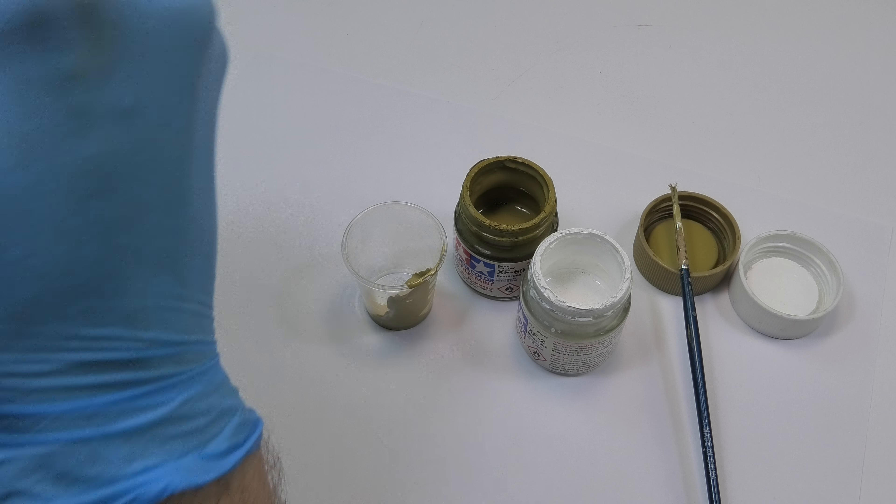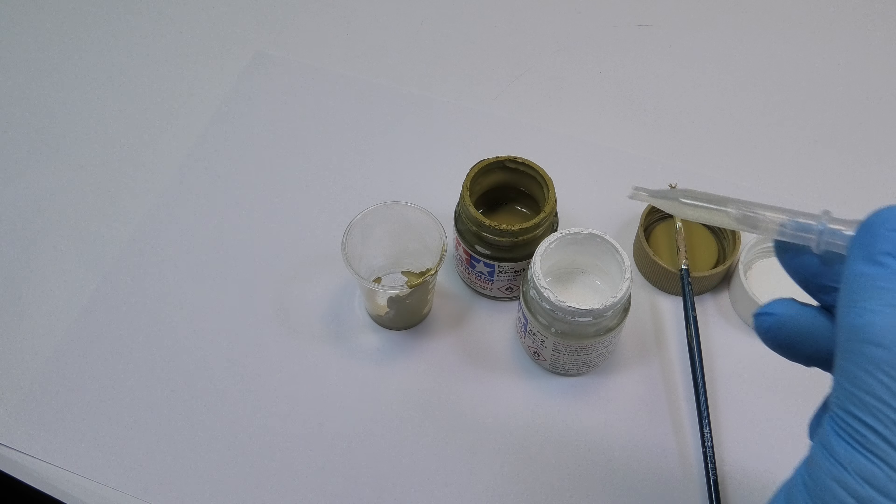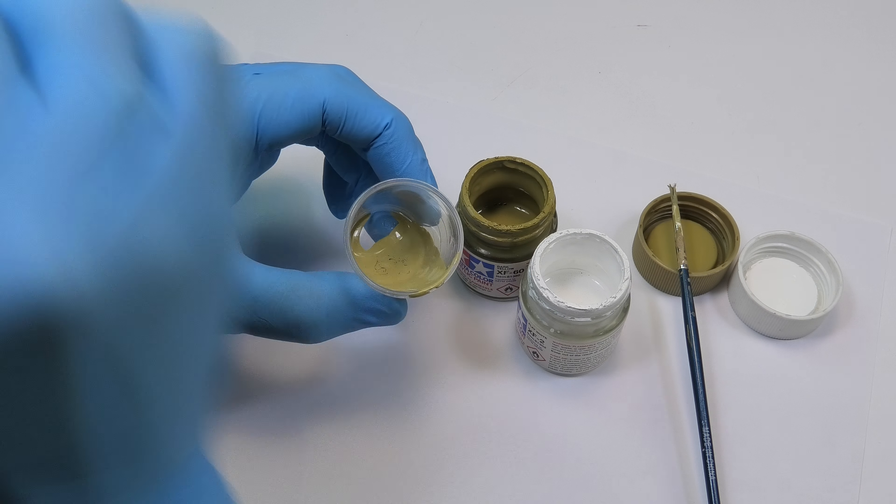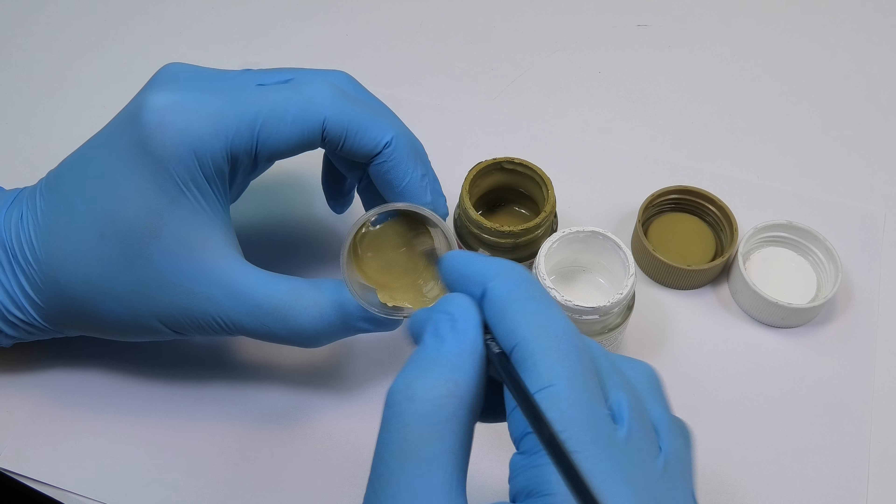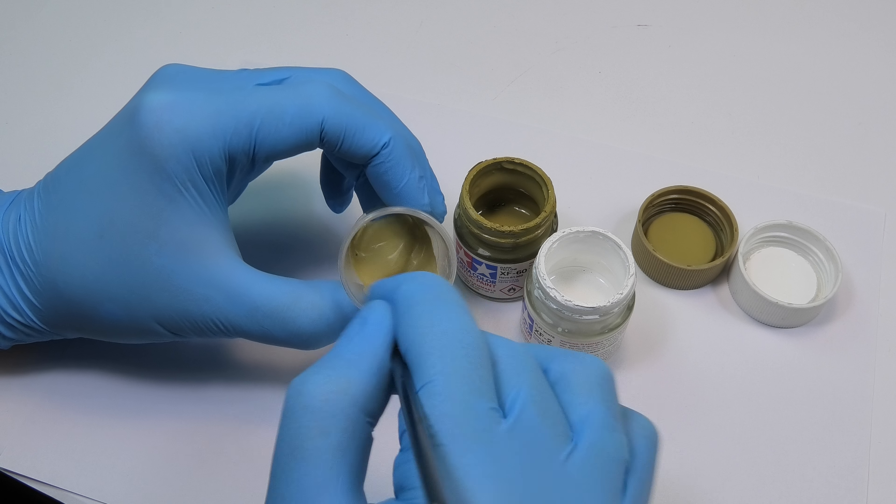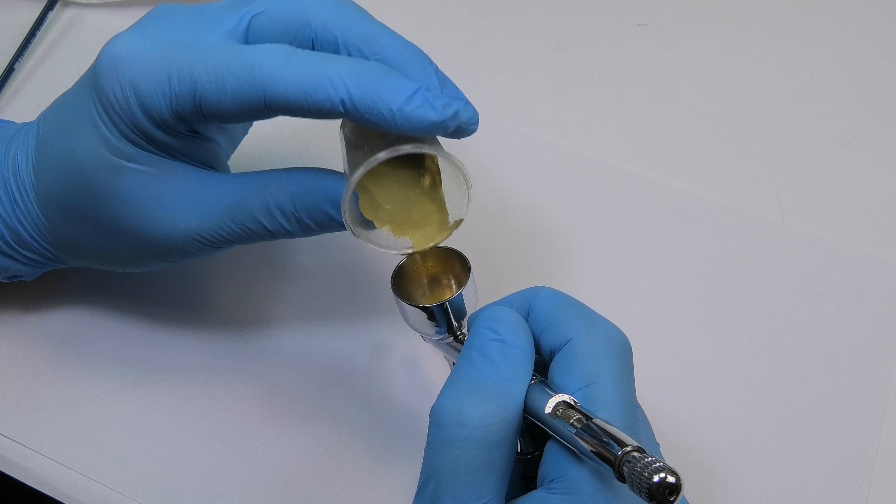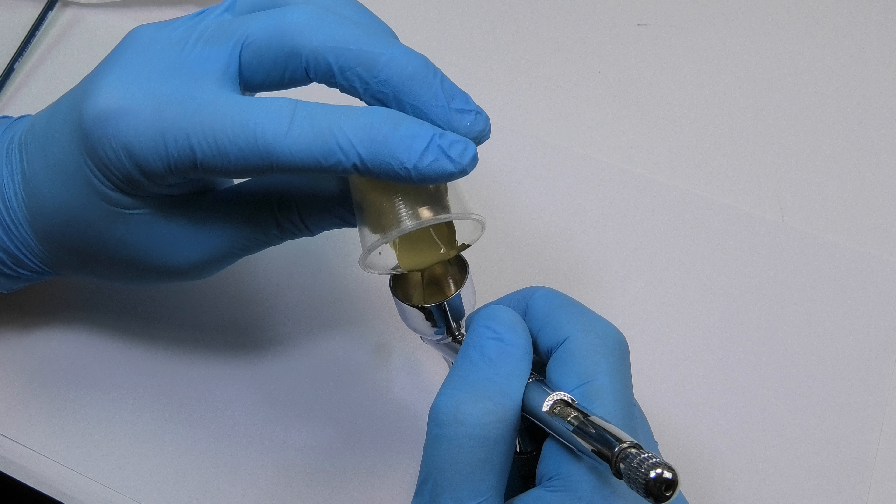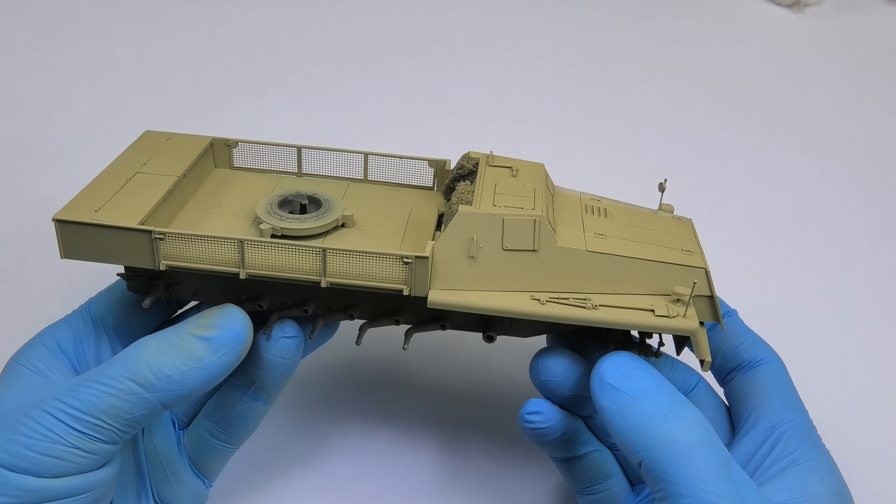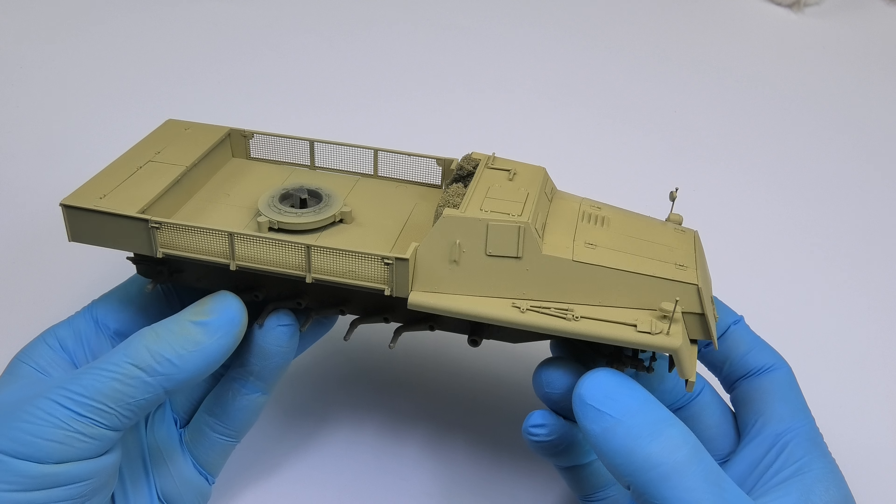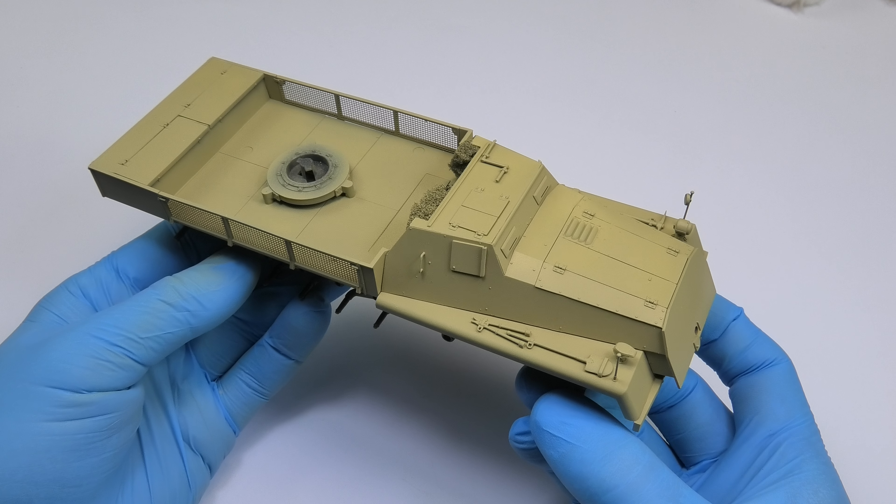Secondly, after weathering the color will be darker a little. Thirdly, it won't be the base color because most of it will be covered by another two camo colors. But you have to start somewhere, and in my opinion it's better to begin with light colors because they are easier to cover with dark colors than vice versa.